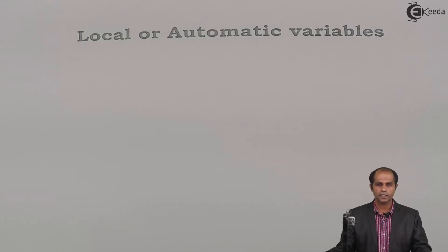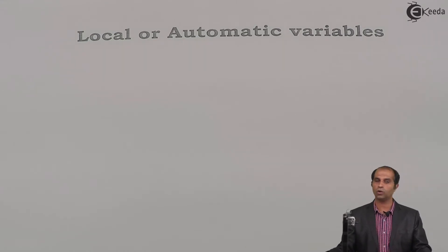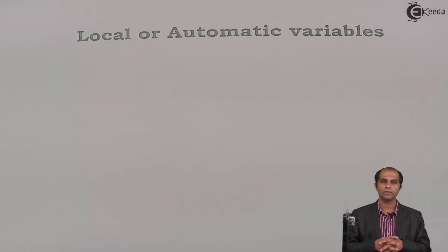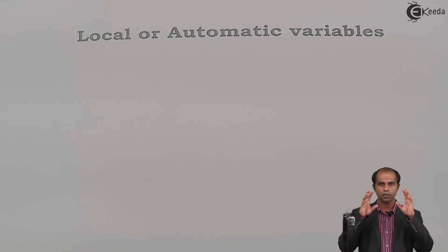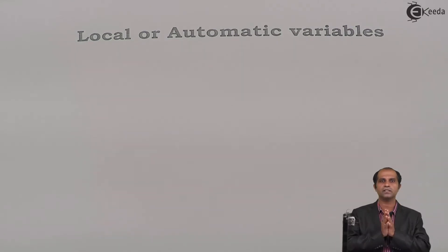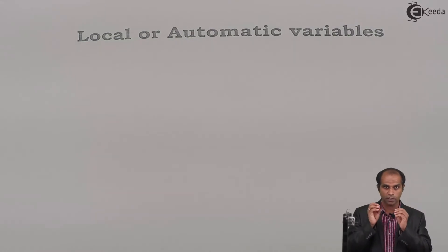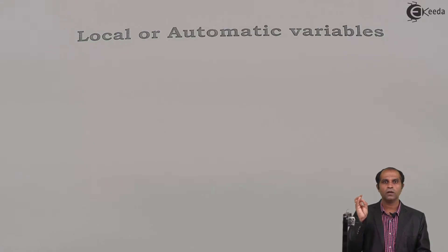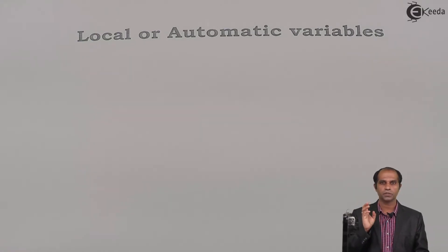Let's look at the first storage class: the memory storage class, which covers local or automatic variables. To answer questions about a specific storage class, you are supposed to write a five-point answer covering: the definition, the scope, the life, the initial value, and the keyword used.